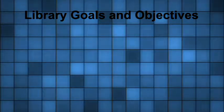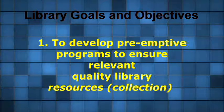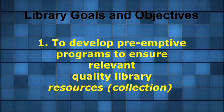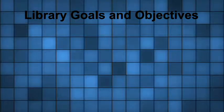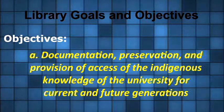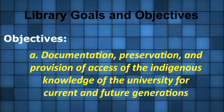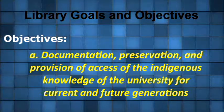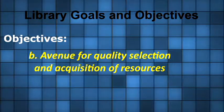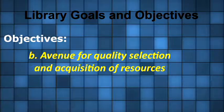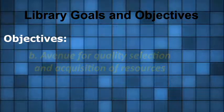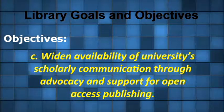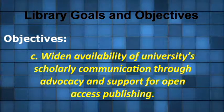Our library goals and objectives. Goal 1: To develop preemptive programs to ensure relevant quality library resources. Its objectives include documentation, preservation and provision of access of the indigenous knowledge of the university for current and future generations, avenue for quality selection and acquisition of resources, and widening availability of university scholarly communication through advocacy and support for open access publishing.